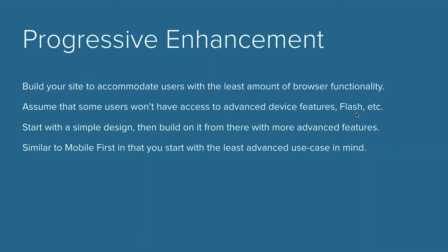Typically how this works at Zurb Studios: we scaffold all our code in HTML, then layer in our CSS or Sass styles on top of that. If there's anything requiring more advanced interaction, we layer in JavaScript on top of that.